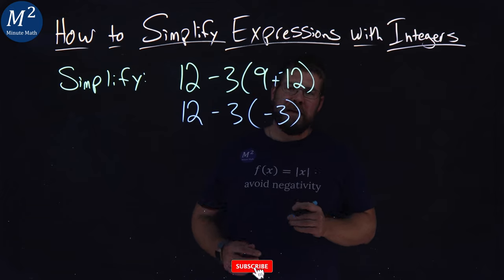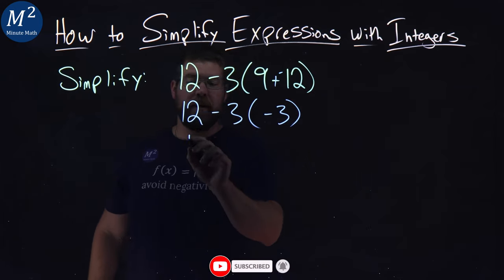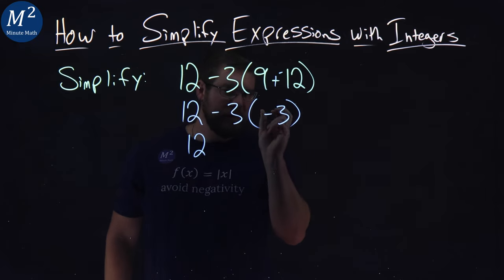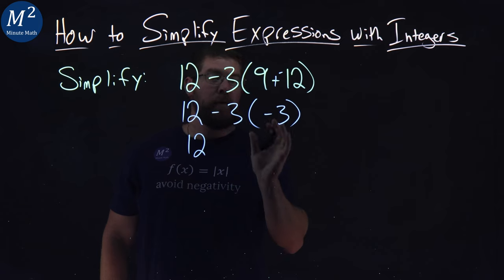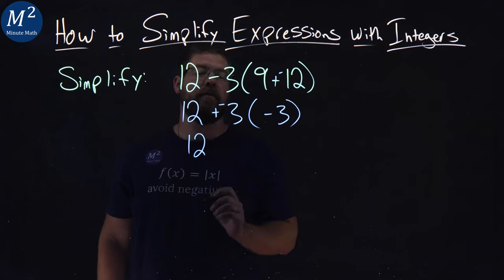From there, we need to keep on going. Order of operations says multiplication happens first, so we have 12 here, and this is actually what I like to do to help really not mess up with my negative signs. This minus 3 is the same thing as multiplying, or adding, a negative 3.